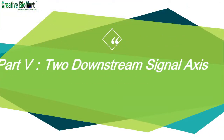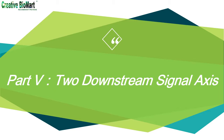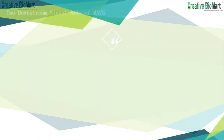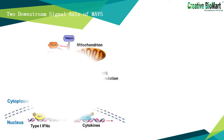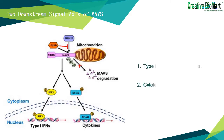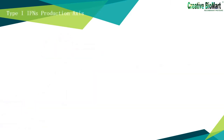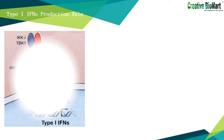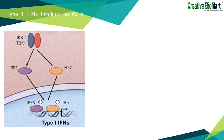Part 5: There are two downstream signaling axes of MAVS. One is the type 1 interferon production signaling pathway, and the other is the inflammatory cytokine production signaling pathway. IPS-1 activates downstream proteins TRAF3 and TRADD. TRAF3 activates IKKε/TBK1, then TBK1 dimerizes and passes signaling to downstream proteins IRF3 and IRF7.